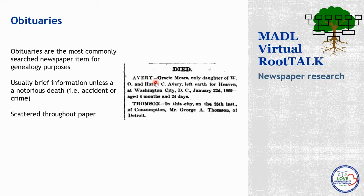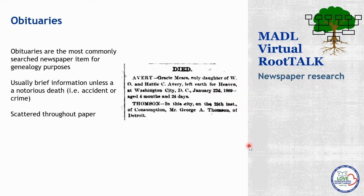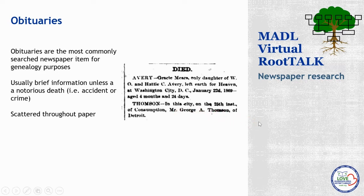Here's a listing from the Muskegon Chronicle on January 30th, 1869 — the earliest Muskegon Chronicle we have saved on microfilm. We have two listings: one for Gracie Mears Avery, the only daughter of W.O. and Hattie Avery, who died in Washington, D.C. at four months and 24 days — we get her full name, her parents' names, and a date of death. The next listing is for Mr. George Thompson, who died in Muskegon on the 25th of consumption; he's from Detroit but happened to be in the city. Very interesting to see what kind of information you get there.